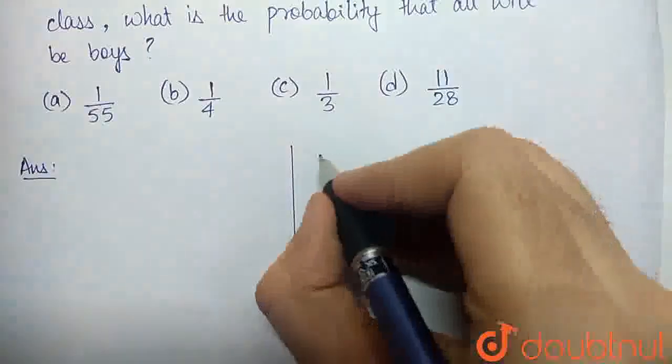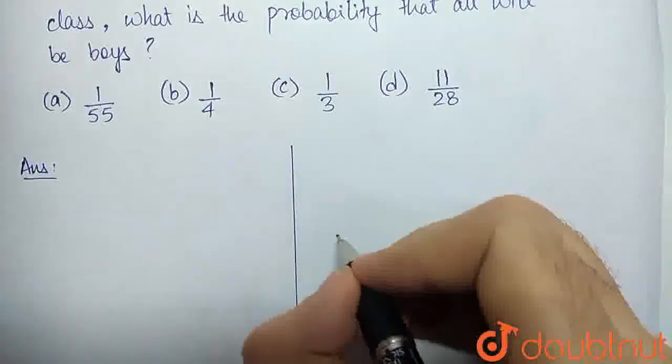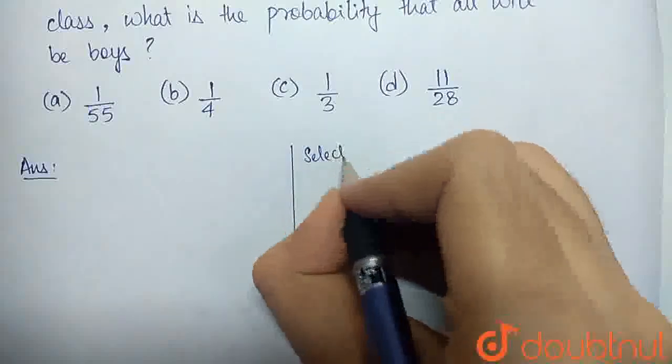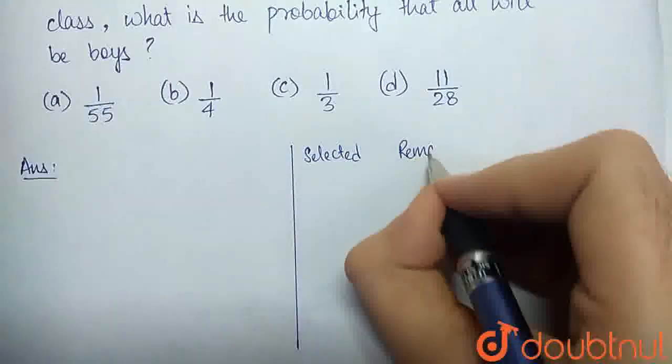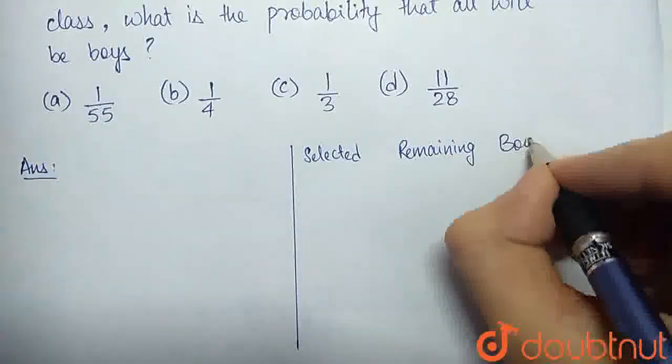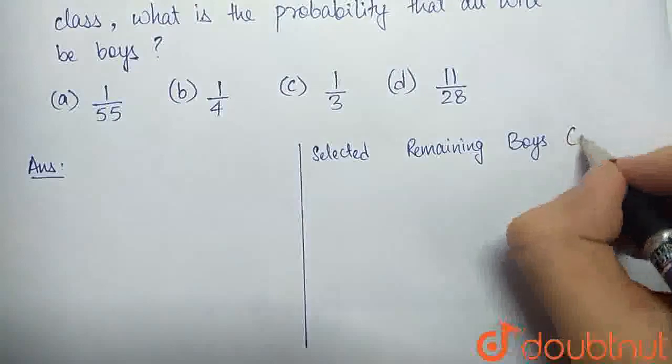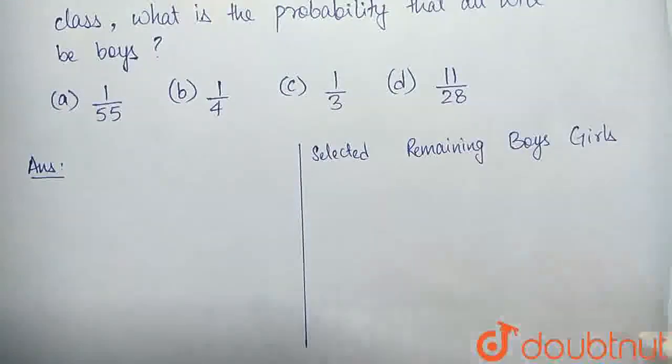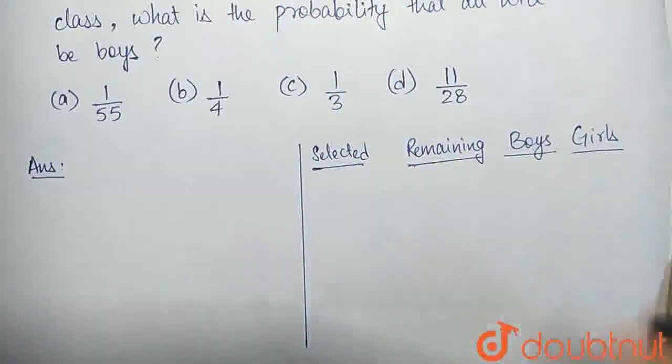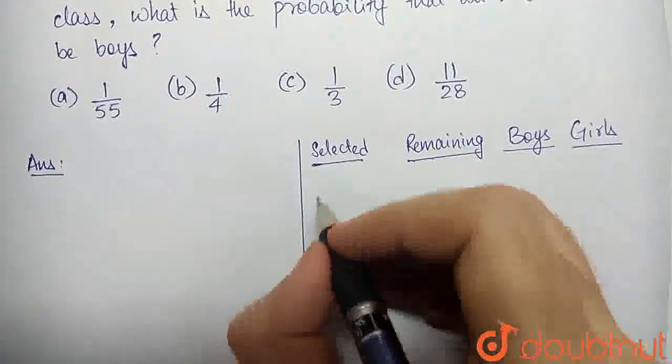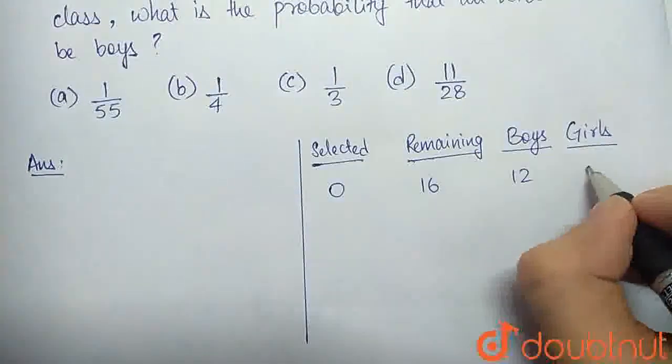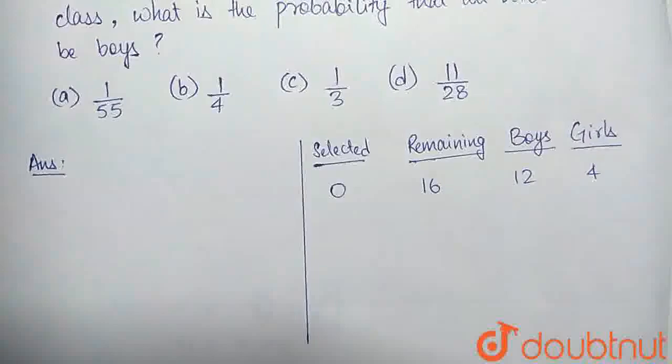So for ease of understanding, I'll be marking some columns here: Selected, Remaining, Boys, and Girls. After each selection, I'll be updating the numbers in these. Currently, we have 0 students selected, 16 students are remaining, of which 12 are boys and 4 are girls.